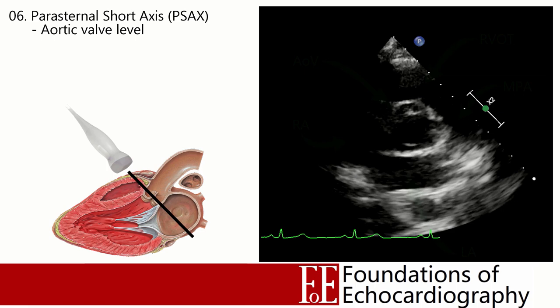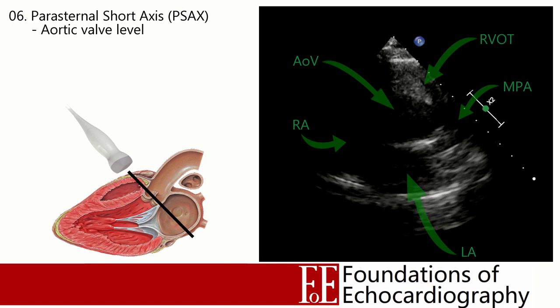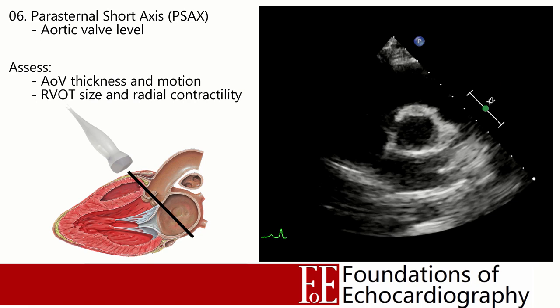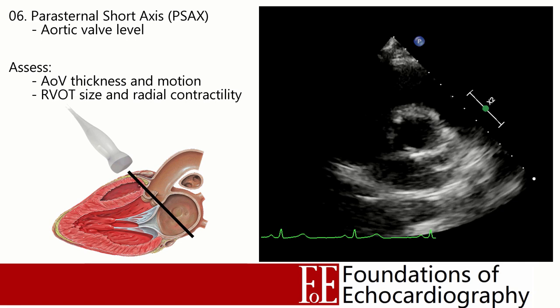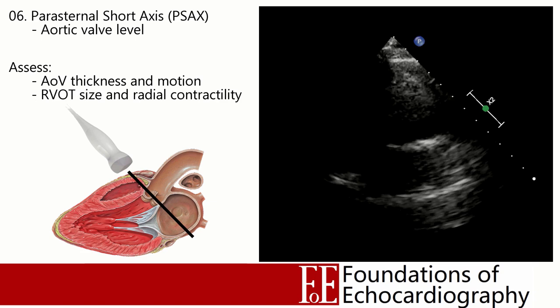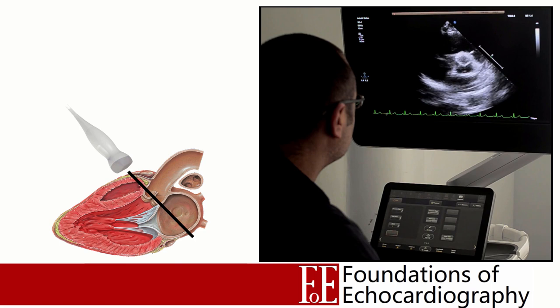In the parasternal short axis at the level of the great vessels, the aortic valve with its three cusps is in the centre of the image. Anterior to it is the right ventricular outflow tract, with the tricuspid valve on the left and the pulmonary valve on the right, and the left atrium in the far field. We can inspect the aortic valve leaflets for thickness and motion, assess the right ventricular outflow tract diameter, and get a sense of RV radial contractility. In severe right ventricular failure, the distance between the RV free wall and the aortic valve remains static throughout the cardiac cycle.